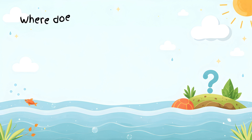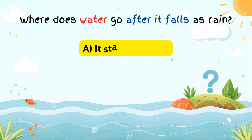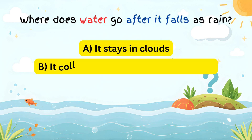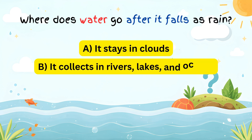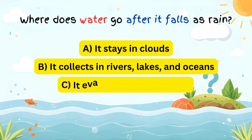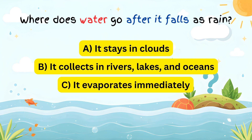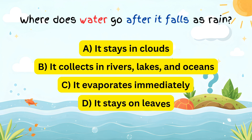Where does water go after it falls as rain? A) It stays in clouds. B) It collects in rivers, lakes, and oceans. C) It evaporates immediately. D) It stays on leaves.